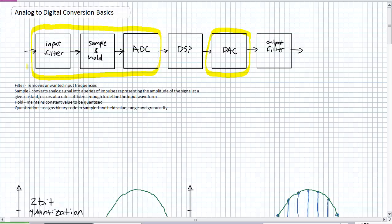The sample and hold portion of the block diagram, what does it do? Well, basically a sample converts the analog signal into a series of impulses representing the amplitude of the signal at a given instant. So basically, it's just looking at it every second, every half second, whatever the frequency you're looking at, and it's saying at that time, it is such and such value.